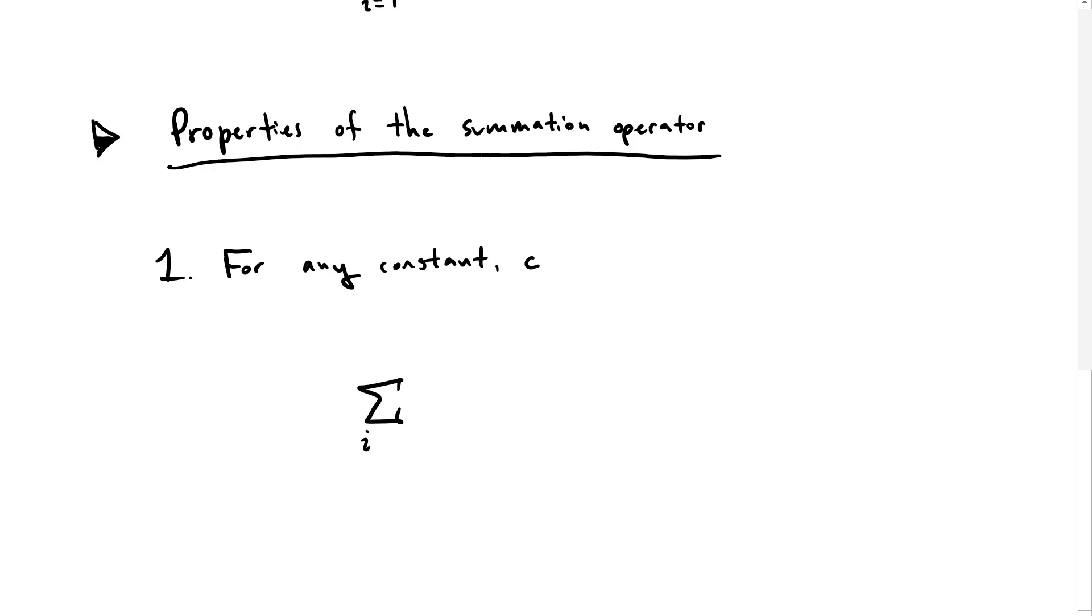If we have the summation from 1 through n of just a constant, that means we're only going to be adding up c one time, two, three, four, n times. So ultimately it's just going to be n times c.